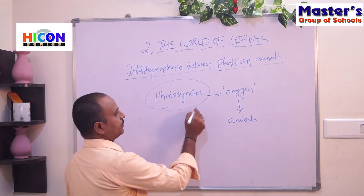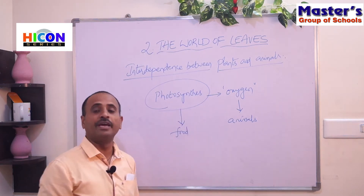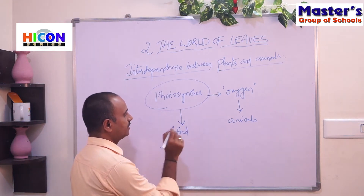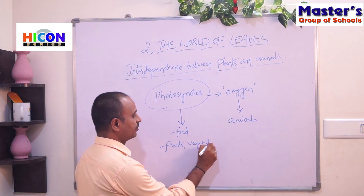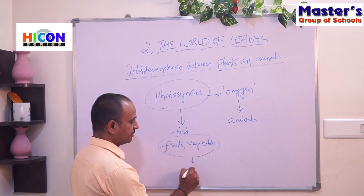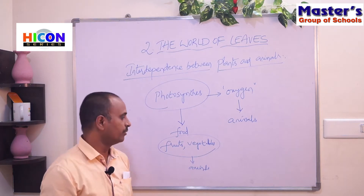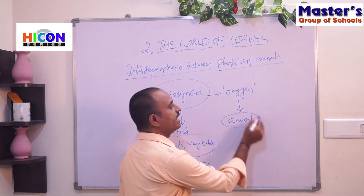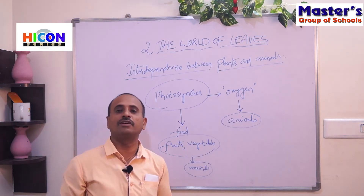Through the photosynthesis process, leaves also prepare food in the form of fruits and vegetables. These fruits and vegetables are very useful for the animals. So plants give food and oxygen for the animals, and without oxygen and food, living beings cannot survive on the earth.